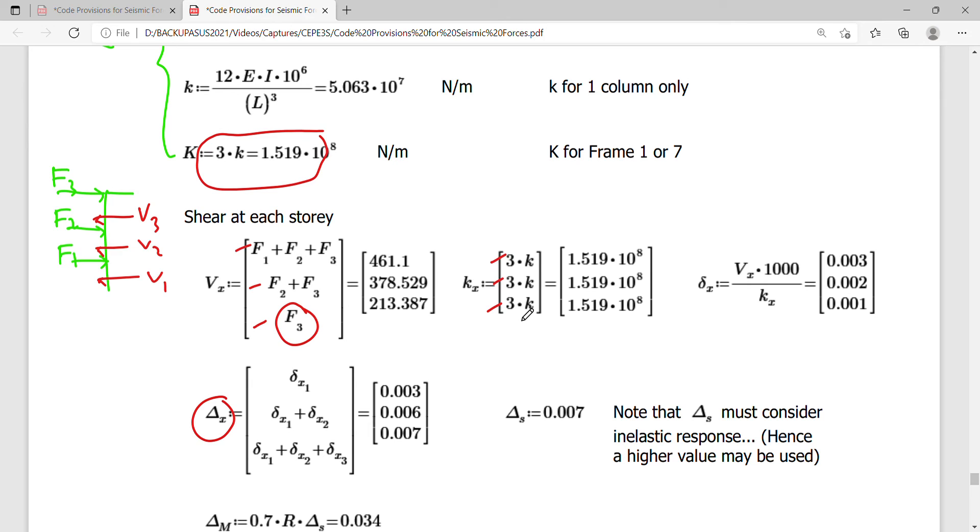For simplicity of computation, I just assumed them to be all equal, and therefore the stiffnesses, or the rigidity rather, are just equal at each story. So I just get this, and then a simple division of my Vx over Kx will yield this one.